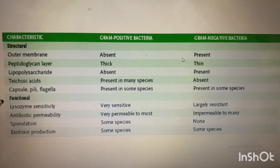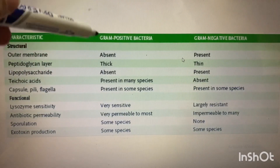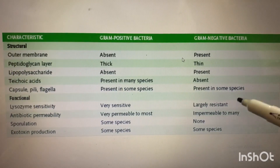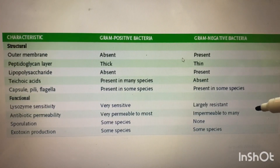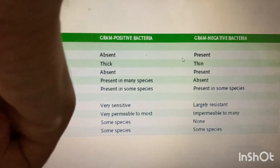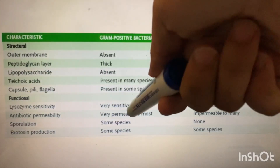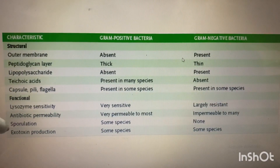The enzyme lysozyme, which helps in killing bacteria, easily kills gram-positive bacteria, while gram-negative bacteria is very resistant to lysozyme. Gram-positive bacteria is very permeable to most antibiotics, while gram-negative bacteria is impermeable to many antibiotics. Regarding sporulation, some species of gram-positive bacteria make spores, while gram-negative bacteria do not make spores.